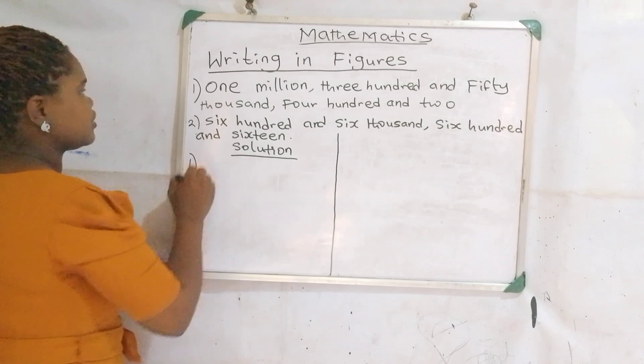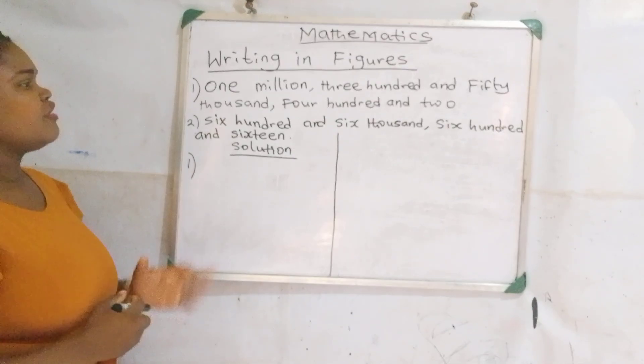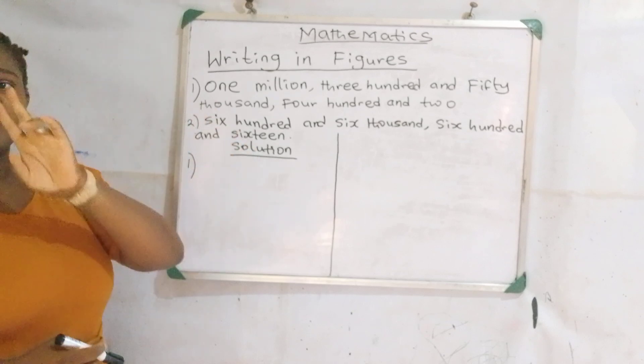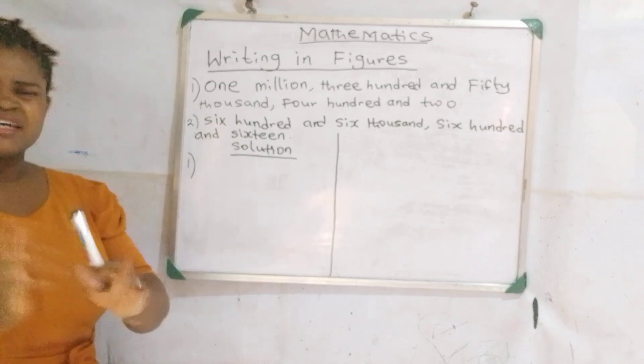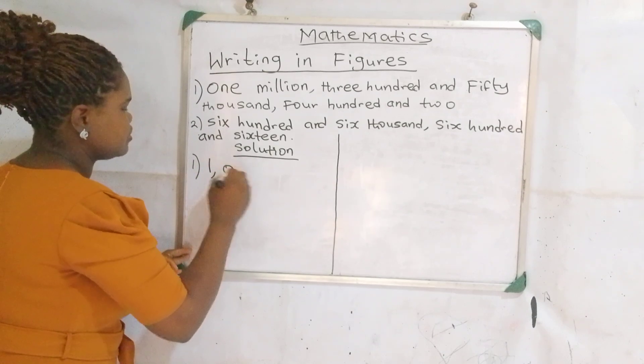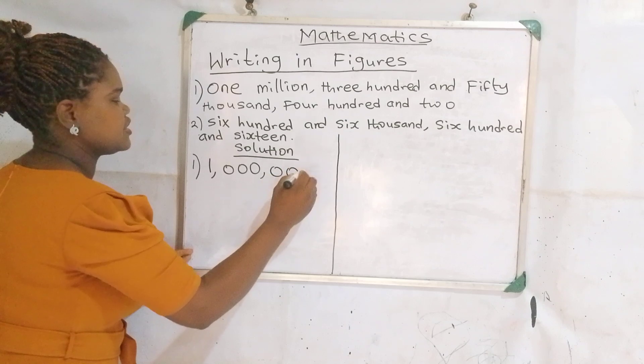Let's take number one. We have 1,350,402. First of all, we take our 1 million. How do we write our 1 million? 1 and six zeros: 1,000,000.